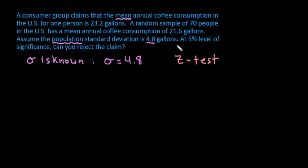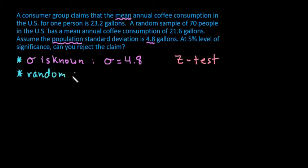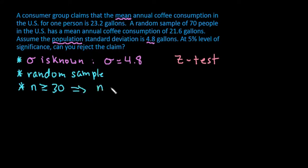Remember that this is based on the central limit theorem, which means you have to meet certain conditions — and check with your text and professor since expectations differ. Using the text I'm currently using: first, you have to know sigma; second, you need a random sample, which we have with 70 people; and third, n must be greater than or equal to 30, or the data must be normally distributed. Since n equals 70, all conditions are met and we can use the z-test.